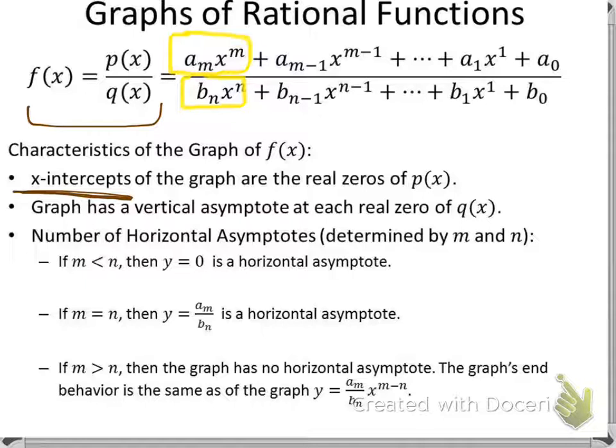For vertical asymptotes, we take each real zero from q of x. We take the denominator, factor it if needed, set it equal to zero, and solve. This makes sense because if anything makes q of x equal zero, the function is undefined at that point, so it would be a vertical asymptote.